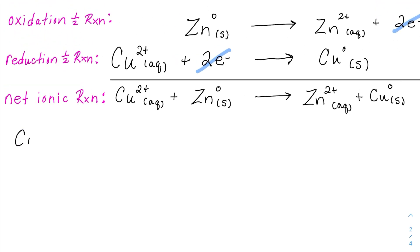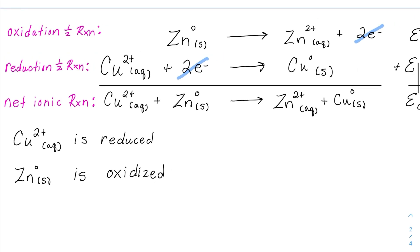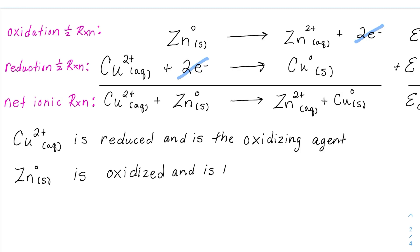First, you may have to label which species is oxidized and which is reduced. Realize that it's only the reactants that can be labeled as oxidized or reduced, not the products. The copper two-plus is reduced because it's part of the reduction reaction, and the zinc neutral solid is oxidized. Next, you might have to identify the oxidizing and reducing agent. The substance that is reduced is the oxidizing agent — so copper two-plus ions are reduced and are the oxidizing agent. And the substance that is oxidized is the reducing agent, which is the zinc.